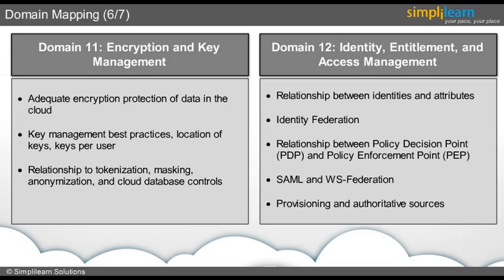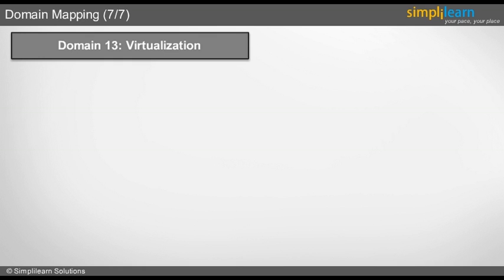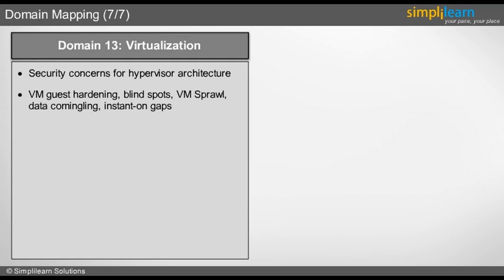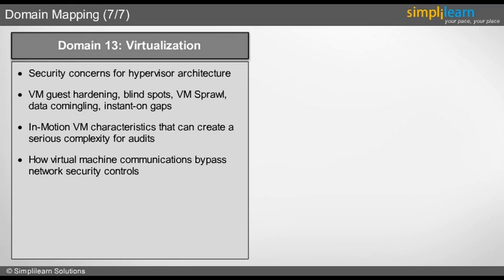Domain 13: Virtualization. Here we will learn about security concerns for hypervisor architecture, VM guest hardening, blind spots, VM sprawl, data commingling, instant-on gaps, in-motion VM characteristics that can create serious complexity for audits, how virtual machine communications bypass network security controls, VM attack surfaces, and compartmentalization of VMs.